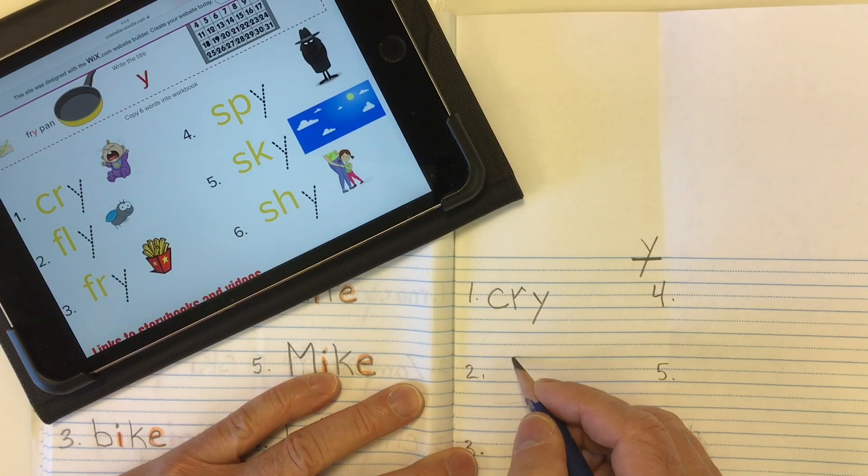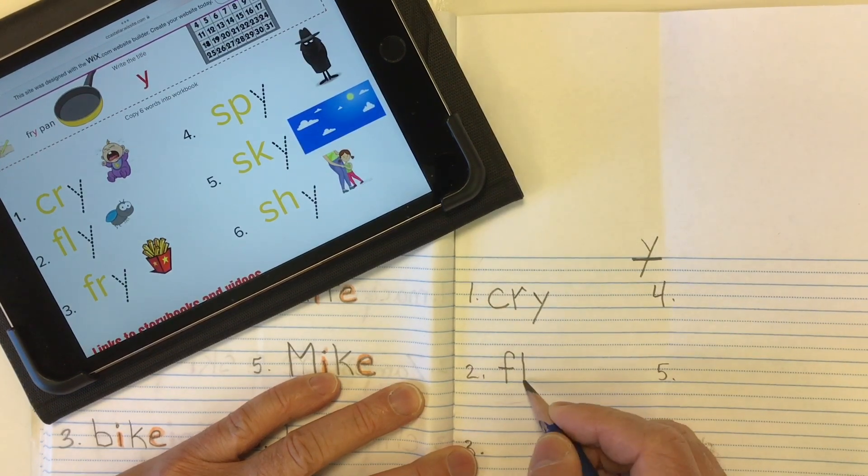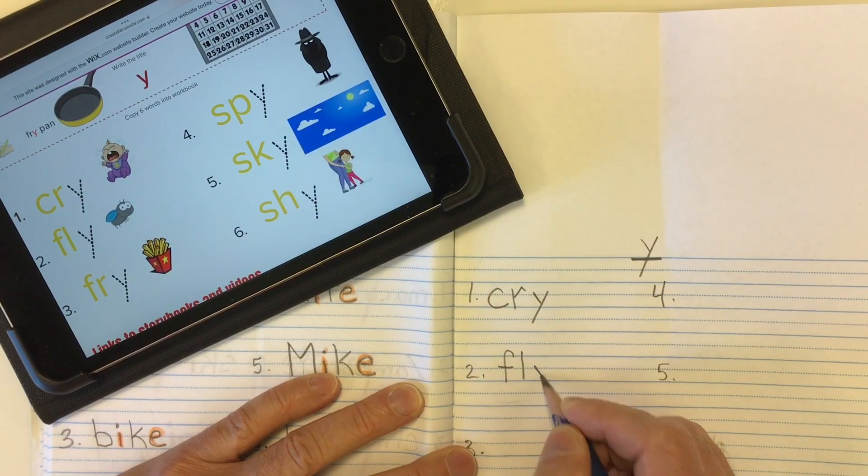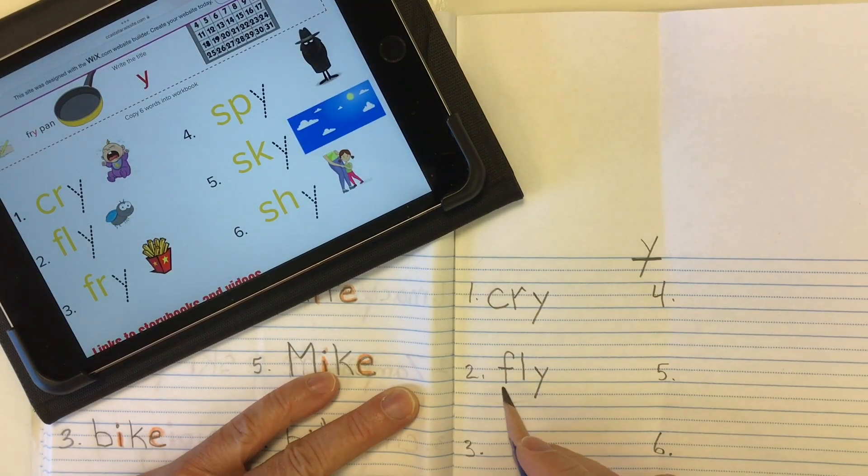Word number two is fly. The fl is a consonant blend again with FL, fl, fl. And our I sound comes from the letter Y at the end, fly, fly.